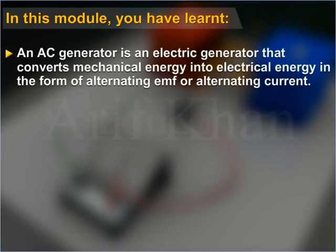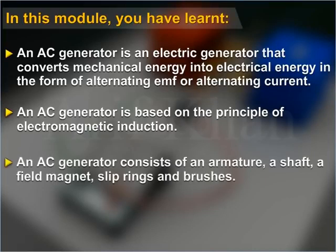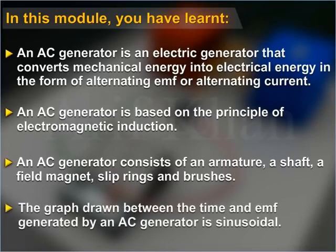In this module you have learned: an AC generator is an electric generator that converts mechanical energy into electrical energy in the form of alternating EMF or alternating current. An AC generator is based on the principle of electromagnetic induction. An AC generator consists of an armature, a shaft, a field magnet, slip rings, and brushes. The graph between time and EMF generated by an AC generator is sinusoidal.